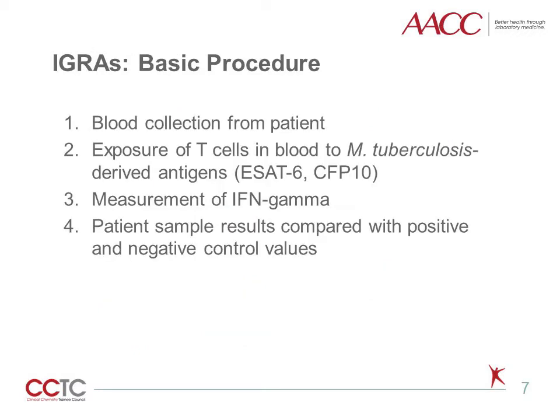Both the QuantiFERON Gold Plus assay and the TSPOT.TB assay are based on the same biology. After blood collection from the patient, blood is mixed with antigens derived from Mycobacterium tuberculosis complex, namely early-secreted antigenic target 6 or ESAT-6, and culture filtrate protein 10 or CFP10. These antigens stimulate interferon gamma release from T cells previously exposed to TB and are more specific for tuberculosis than PPD because they are not shared with any BCG vaccine strains or most species of non-tuberculous mycobacteria. The amount of interferon gamma released is then measured and compared with positive and negative controls to formulate a result.